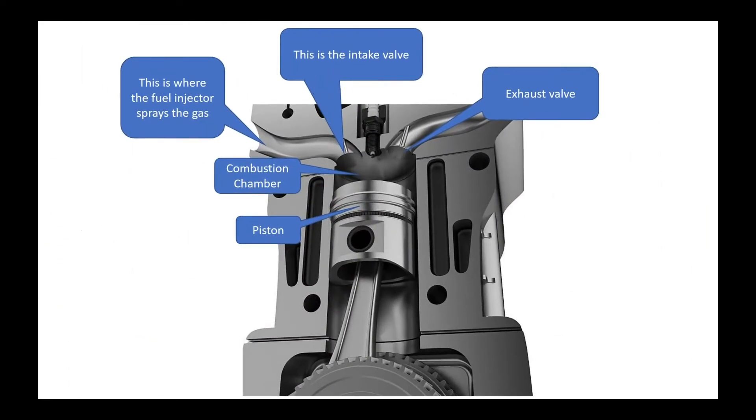In the diagram we can see that the intake valve can open and close to let gas into the combustion chamber. In the combustion chamber there is the piston which moves up and down to control the explosions and power the car.